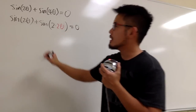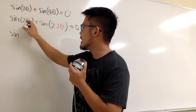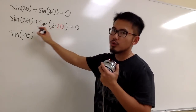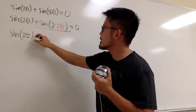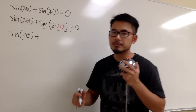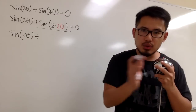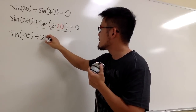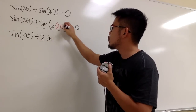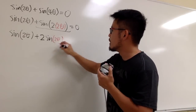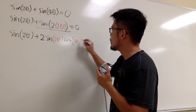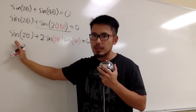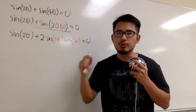Now we apply the double angle formula to that second term. The first term, sine of 2 theta, stays the same. The double angle formula says sine of 2 times an angle equals 2 sine of the angle times cosine of the angle. So we get sine of 2 theta plus 2 sine of 2 theta times cosine of 2 theta, and this is equal to 0.